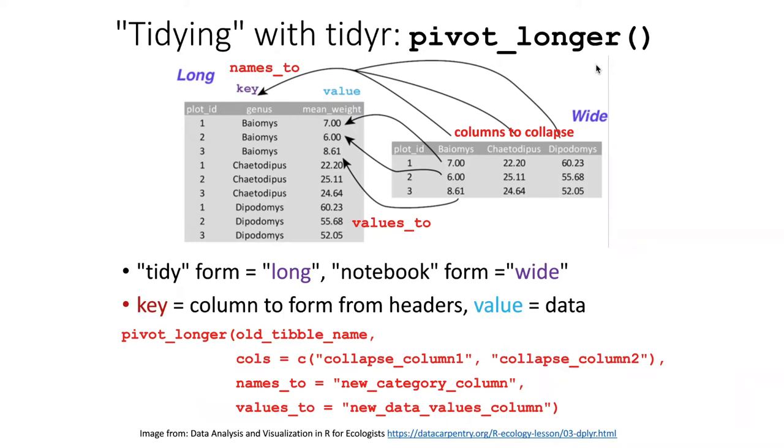The process that we are going to carry out with this function is summarized quite well in this diagram, which I borrowed from a Data Carpentry lesson. Our job essentially is to take these column headers here and collapse them together into a column, which I'm going to call the key column. You can see that each of the column headers forms a block of rows in that key column.